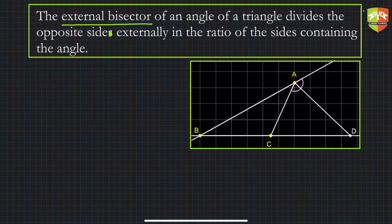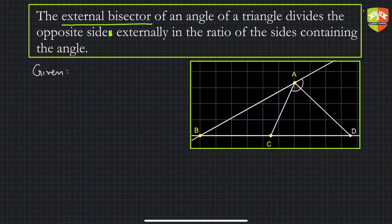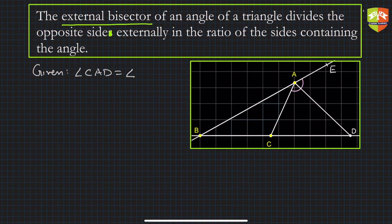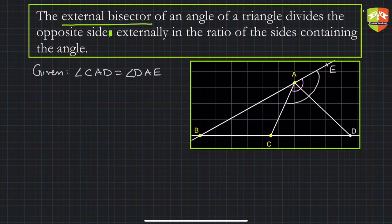You've already seen the validation in the previous part of the video. The given condition is that angle CAD is equal to angle DAE — this point is E. You already know what an external angle of a triangle is. There are six external angles possible; this is one of them. Let me call angle CAD as x and angle DAE also as x, so these are equal angles.